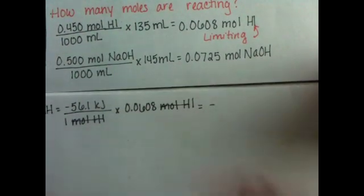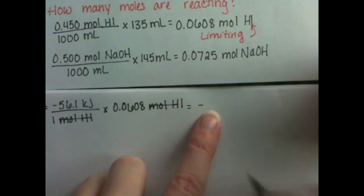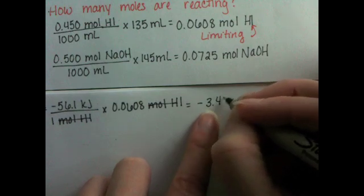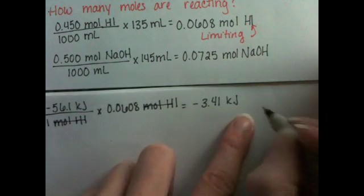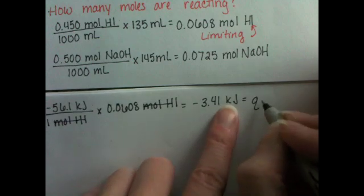And that tells us that our actual heat evolved is negative 3.41 kJ. And that is our heat of reaction.